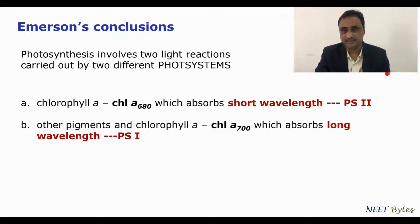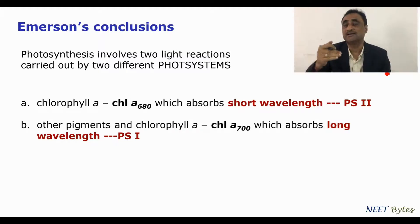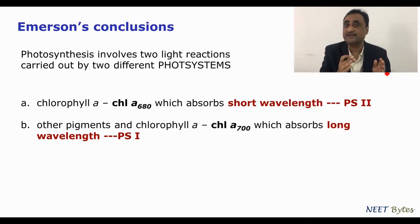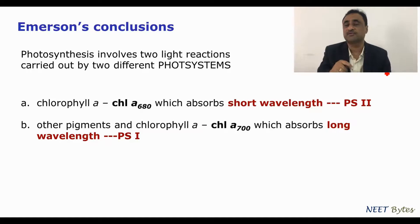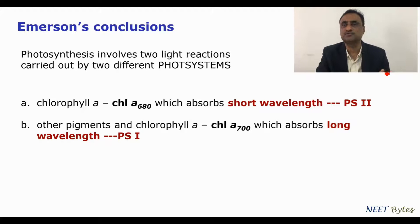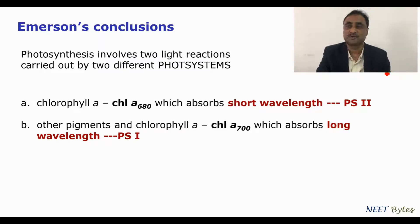Why was there a drop in photosynthetic yield in the red drop phenomenon? As we increase the wavelength, one of the photosystems gets out of range. Photosystem 2 is deactivated in the red drop phenomenon because it works at the shorter wavelength of light.